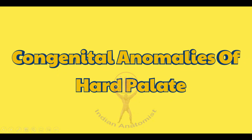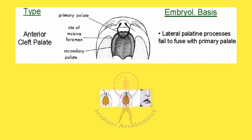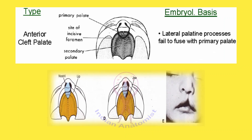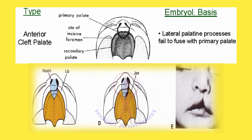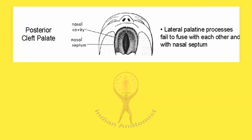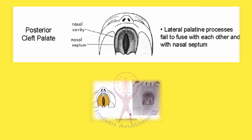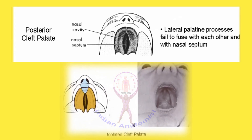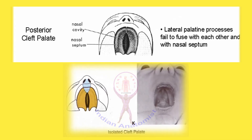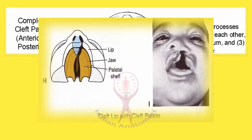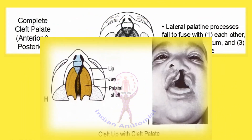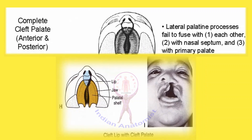Congenital anomalies of the hard palate: An anterior cleft palate results when the lateral palatine process fails to fuse with the primary palate. A posterior cleft palate results when the lateral palatine process fails to fuse with each other and with the nasal septum. A complete cleft palate — both anterior and posterior — results from failure of the lateral palatine processes to fuse with each other, with the nasal septum, and with the primary palate.